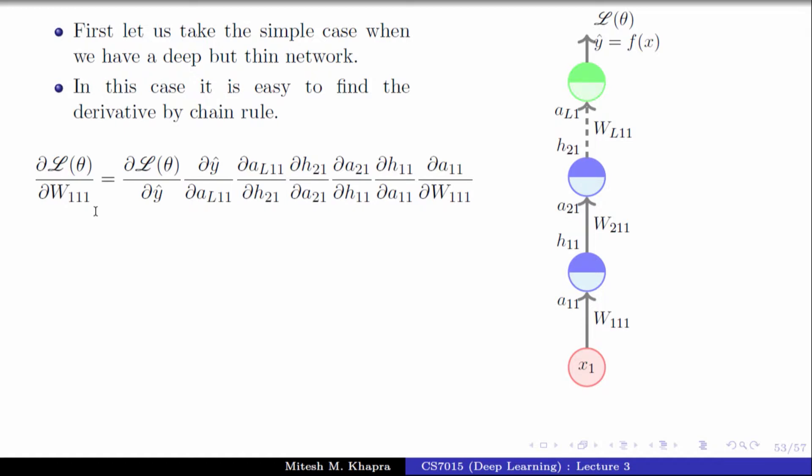If I ask you to compute the derivative of sine x, or even sigmoid of x, we've already done that. So any of these individual elements you can easily compute. But remember, this is a thin network. Things become much more complicated when you have a wide network because then several relations exist. So let's look at that.